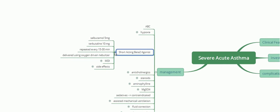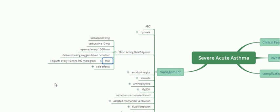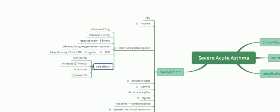Short-acting beta-2 agonists must be repeated every 15 to 30 minutes. They can be given using a nebulizer along with the oxygen delivery system. If a nebulizer is not available, a metered dose inhaler (MDI) is also effective, but each puff gives only 100 micrograms, so four to six puffs must be taken every 10 minutes to achieve the required dose.